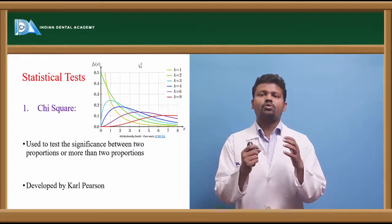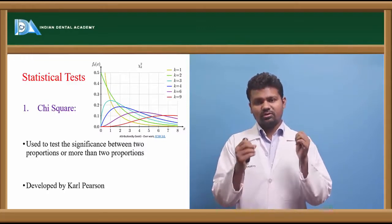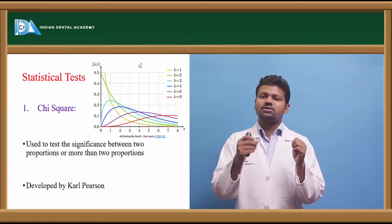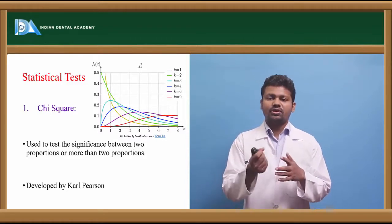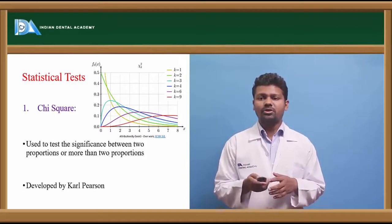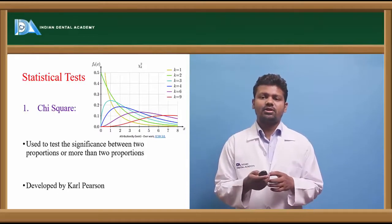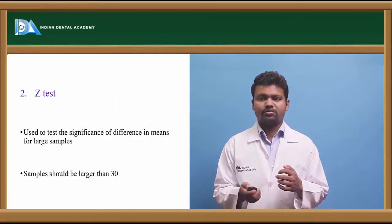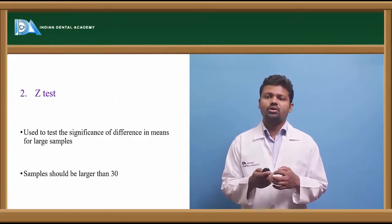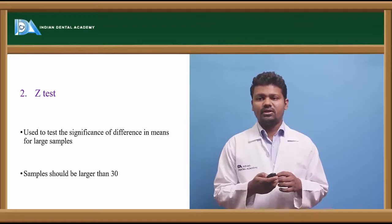The significance of these two proportions can be calculated using the chi-square test. It was developed by Karl Pearson, so it's also called Pearson's chi-square test.